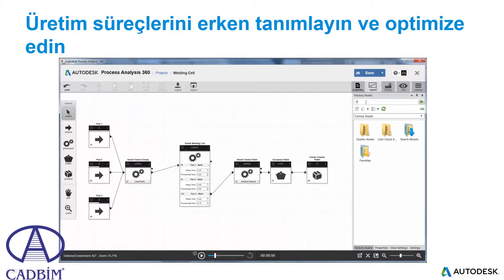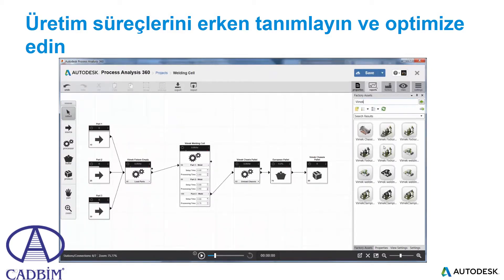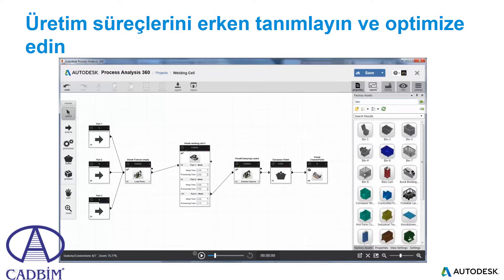The factory asset warehouse contains the physical equipment that is used in the layout. Simply drag the asset to a process, source, buffer, or finished product. This is the same asset library that is used in AutoCAD and Inventor, which will save time during the design stage.